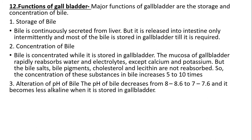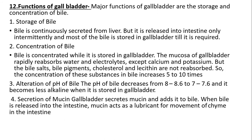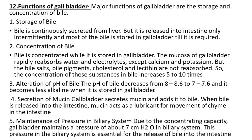Alteration of pH of bile: the pH of bile decreases from 8.0–8.6 to 7.0–7.6, becoming less alkaline when stored in the gallbladder. Secretion of mucin: the gallbladder secretes mucin added to the bile; when bile is released into the intestine, the mucin acts as a lubricant for the movement of chyme. Maintenance of pressure in the biliary system: due to its concentrating capacity, the gallbladder maintains a pressure of about 7 cm of water in the biliary system, which is essential for the release of bile into the intestine.